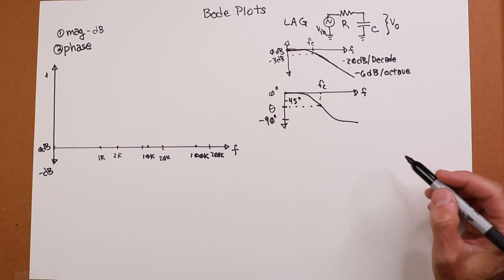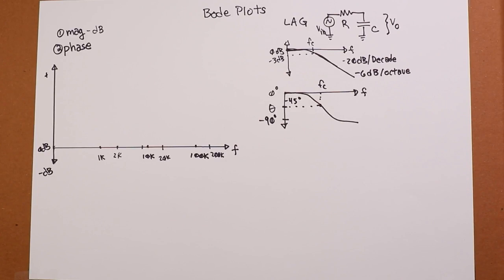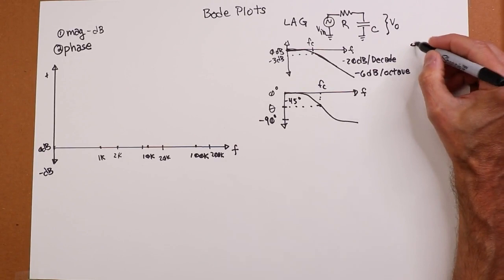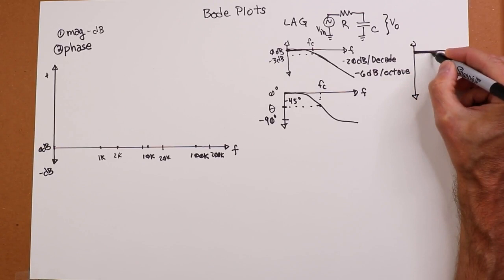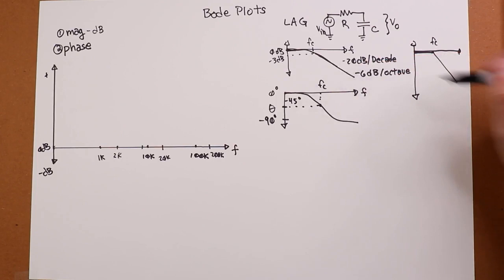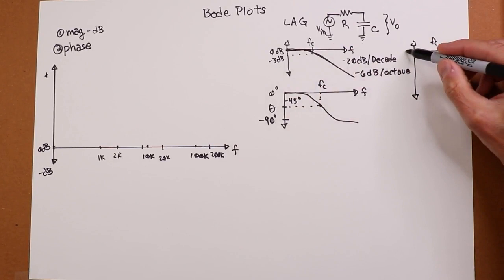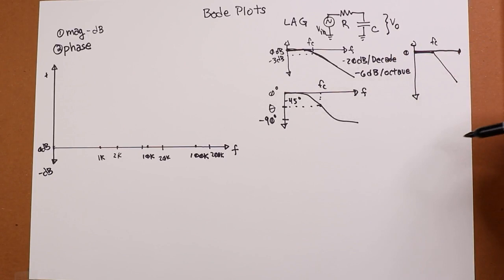Now we can make simple approximations of these things, sort of straight line approximations. So we just say this is perfectly flat to fc, and then it just drops at this rate. Instead of there actually being a little curve and seeing it minus 3, we just say it's flat perfectly to fc, and then it drops off at 20 dB per decade.